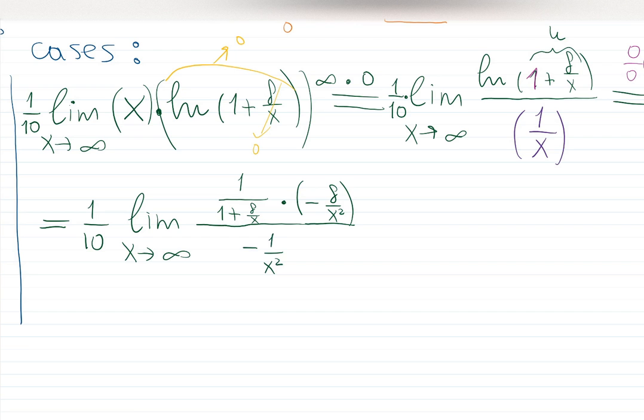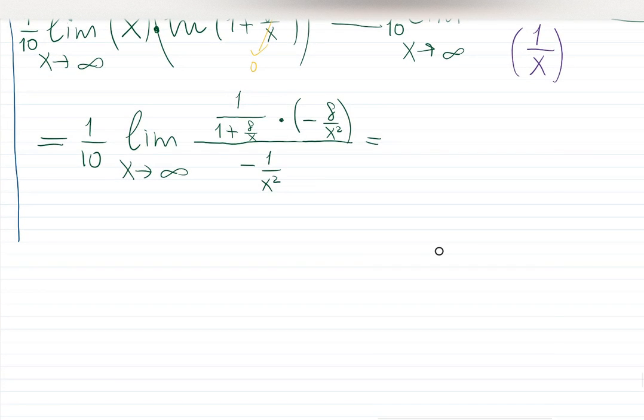The denominator becomes minus 1 over x squared. Such a mess. Let's try to fix it. Let's collect everything where it's supposed to belong. Everything which is supposed to be in the numerator should go there, and whatever is in the denominator should go there. So this piece right now is in the denominator. Well then let's put it in the denominator.